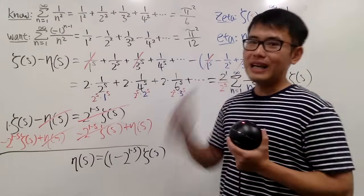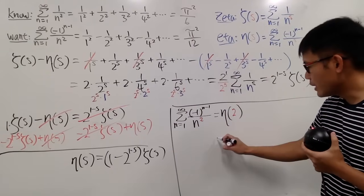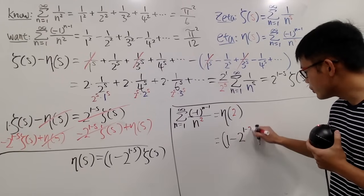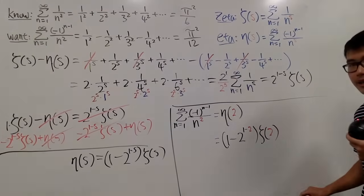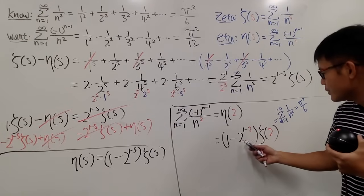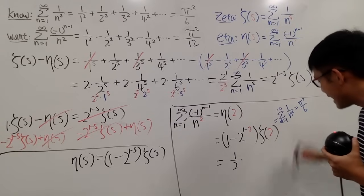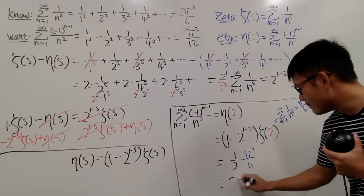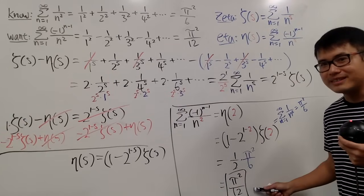Now to figure out our original problem, I just plug in s equal to 2. So eta of 2 equals 1 minus 2 raised to the 1 minus 2 power, times theta of 2. That's 1 minus 2 to the negative 1, which is 1 minus one-half, which equals one-half. And theta of 2 is pi squared over 6. So the result is one-half times pi squared over 6, which gives us pi squared over 12. Very nice result!